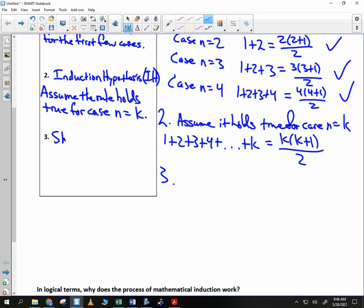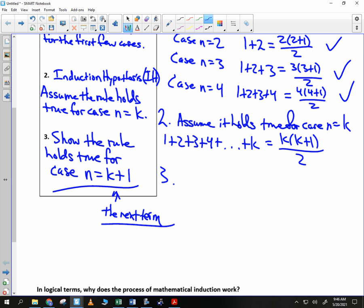So what that means is I want to write this out, but instead of stopping at 2 or 3 or 4, I stop at k. So basically all that means is instead of putting an n in that spot, I just put a k in that spot. So 1 plus 2 plus 3 plus 4 plus dot dot dot plus k equals k times k plus 1 divided by 2. That's all there is for step 2. Step 3 is show the rule holds true for case n equals k plus 1. k plus 1 is the next term. Does that make sense? k plus 1 is the one that happens after k, right?